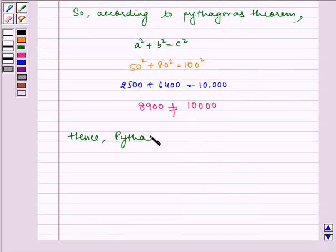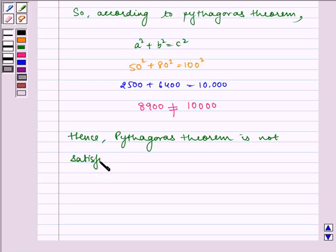Hence, Pythagoras theorem is not satisfied. So, the triangle with the given sides is not a right-angled triangle.